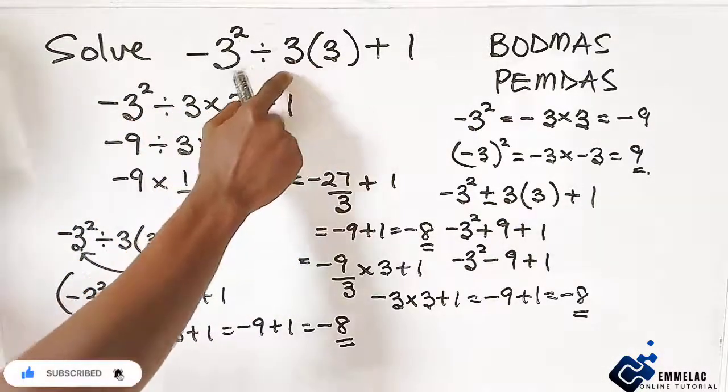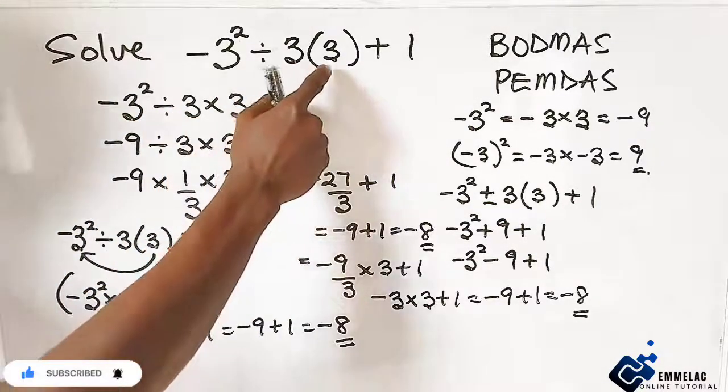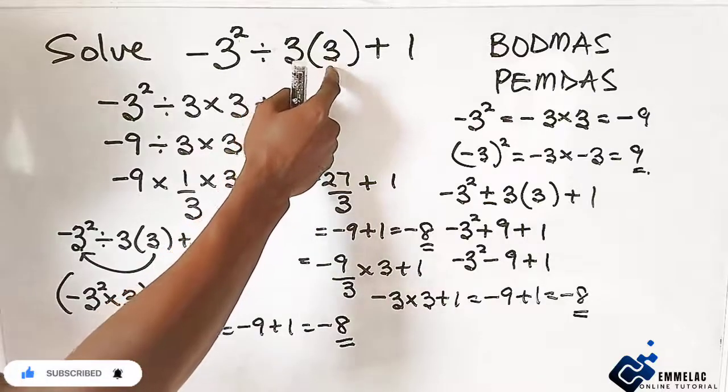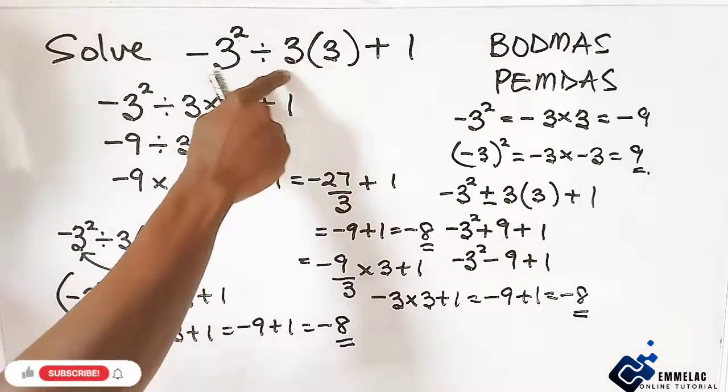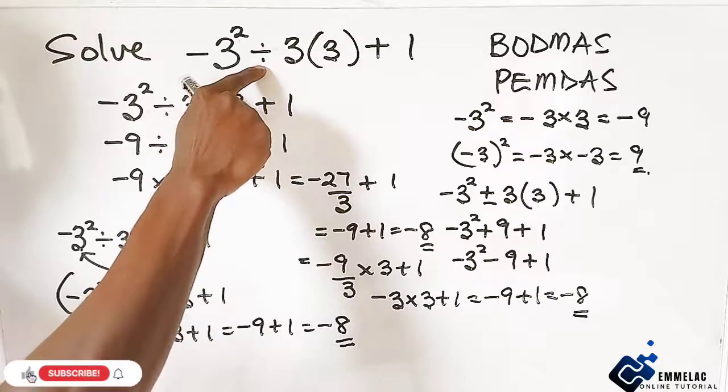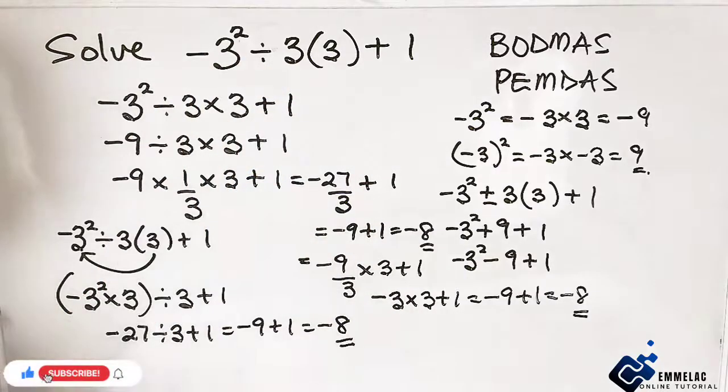So the error we need to avoid is not to multiply a number with another number that has the division sign in front.